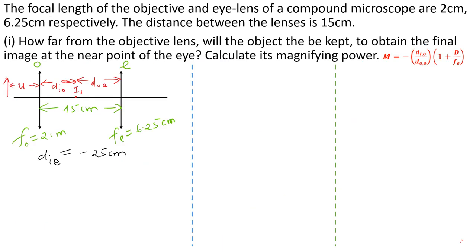Here is the next example in the same topic. The focal lengths of the objective and eye lens of a compound microscope are 2 cm and 6.25 cm respectively. The distance between the lenses is 15 cm. How far from the objective lens should the object be placed to obtain the final image at the near point of the eye? We also need to find the magnifying power.